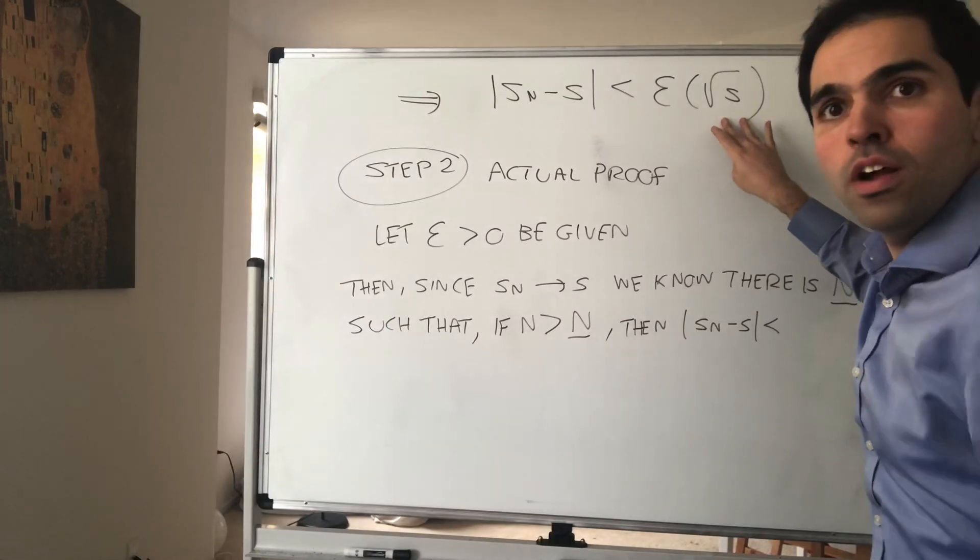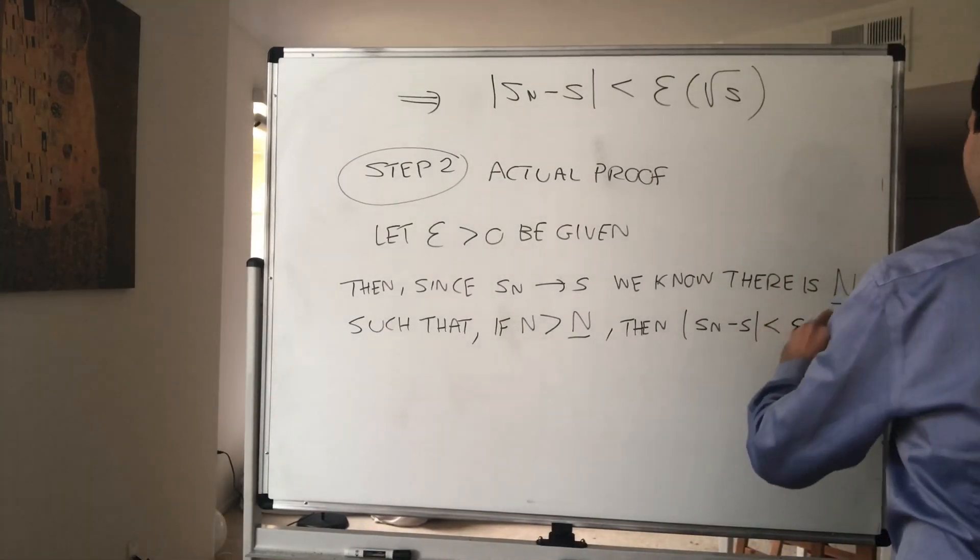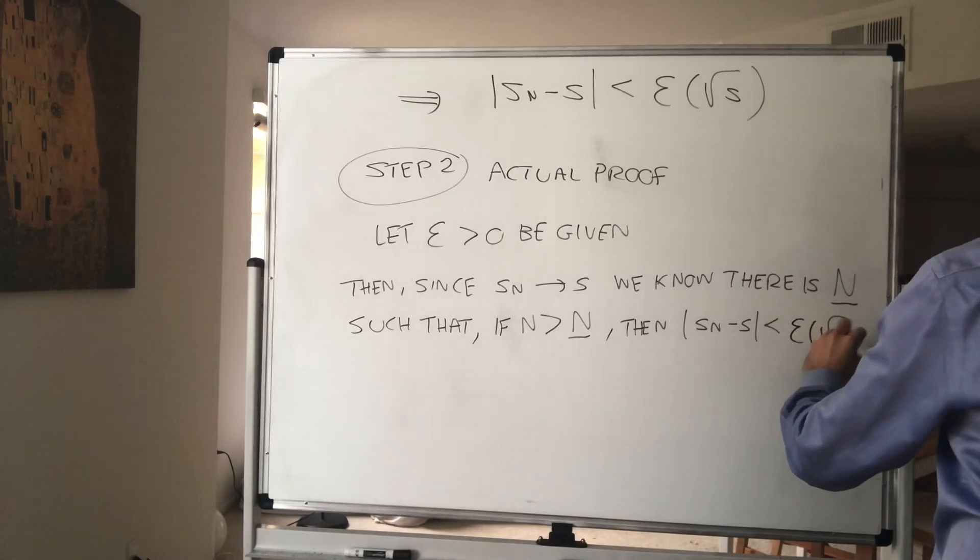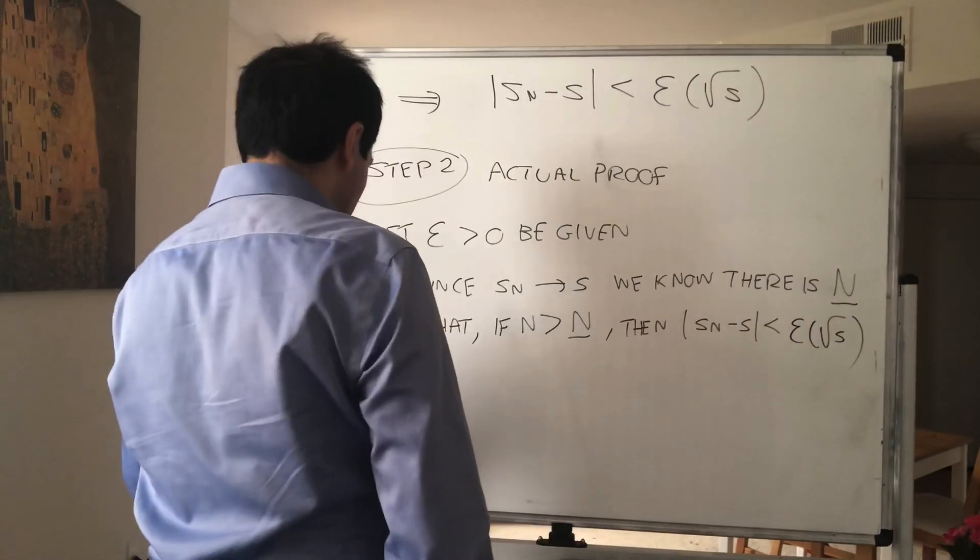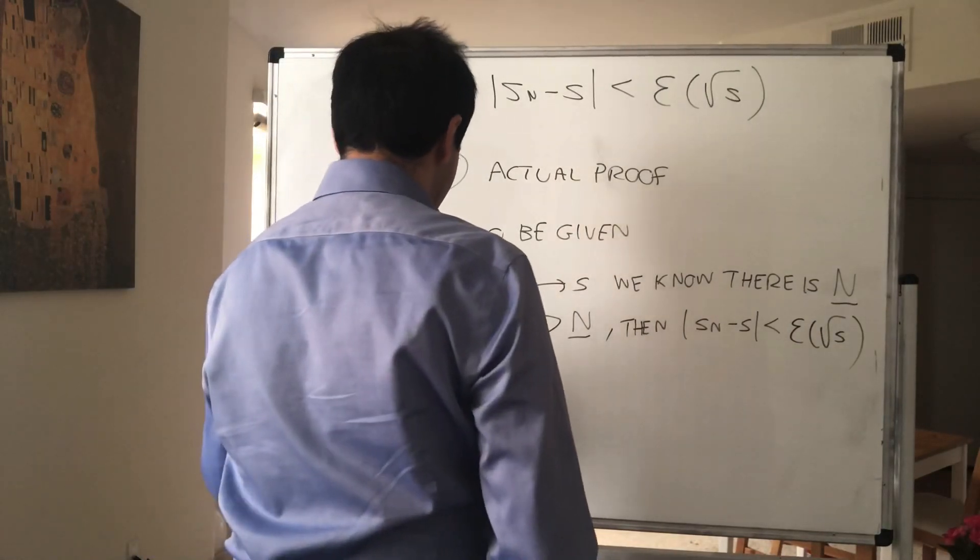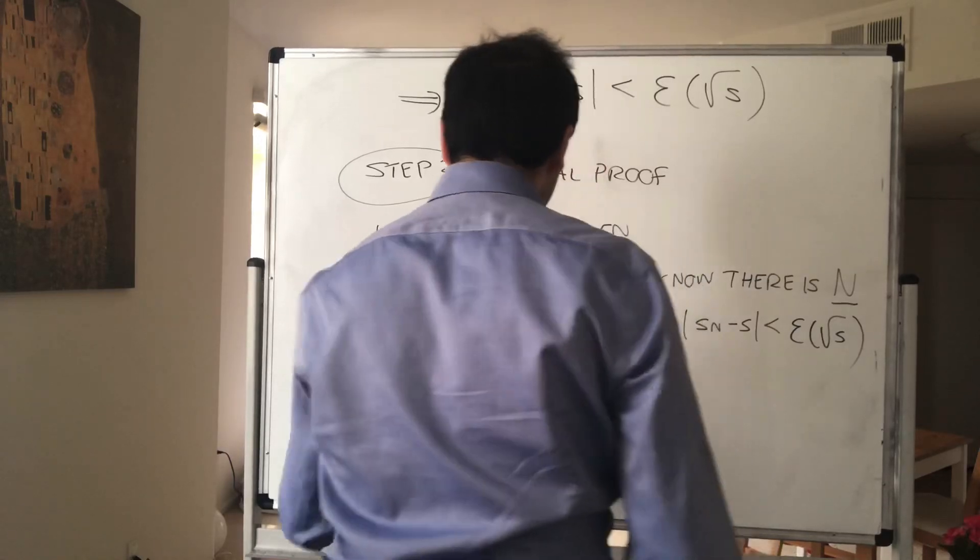Again, think less than 2 epsilon or 3.5 epsilon, doesn't matter, epsilon times this. And the point is, for that same threshold, for that same N,